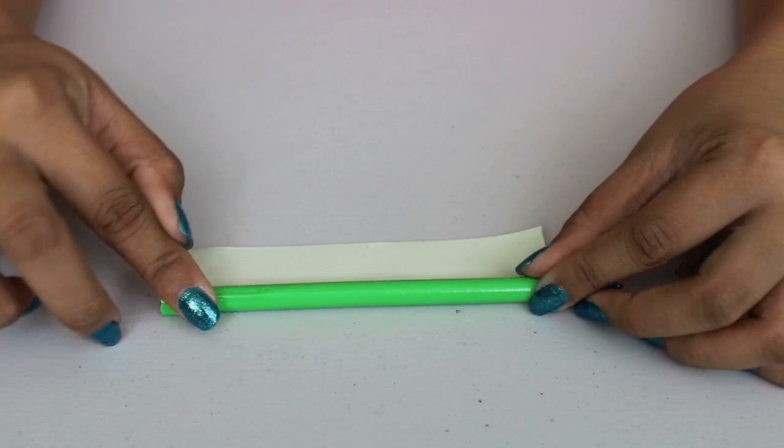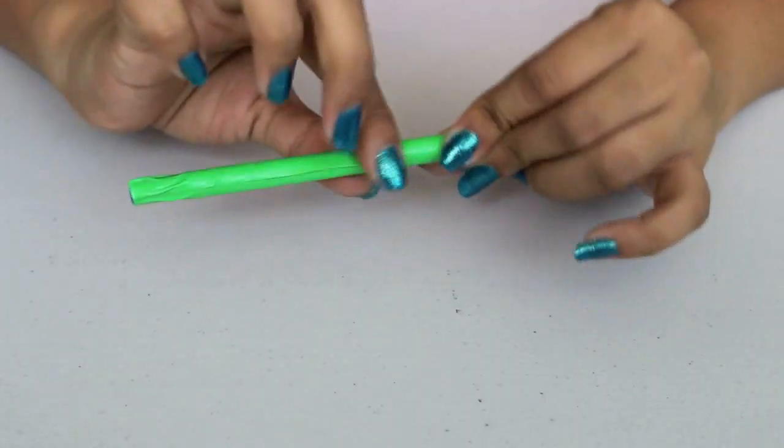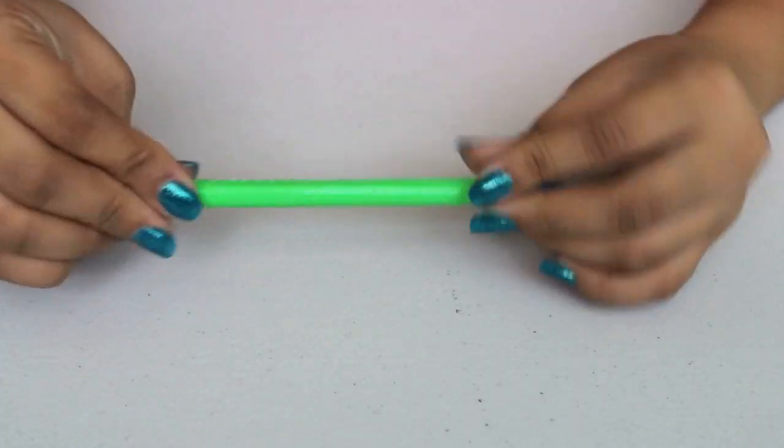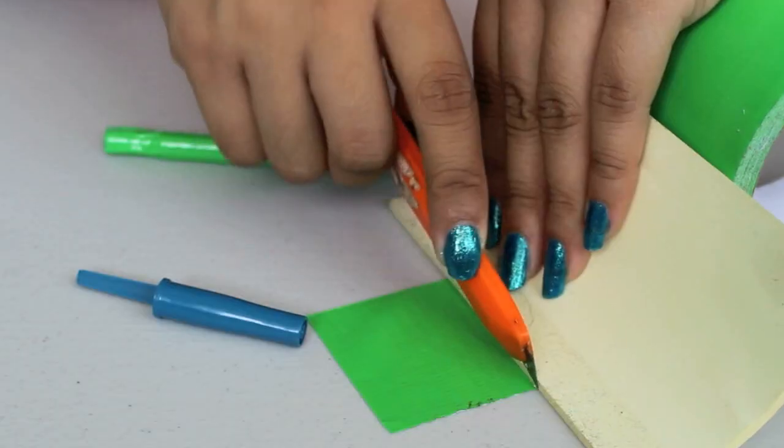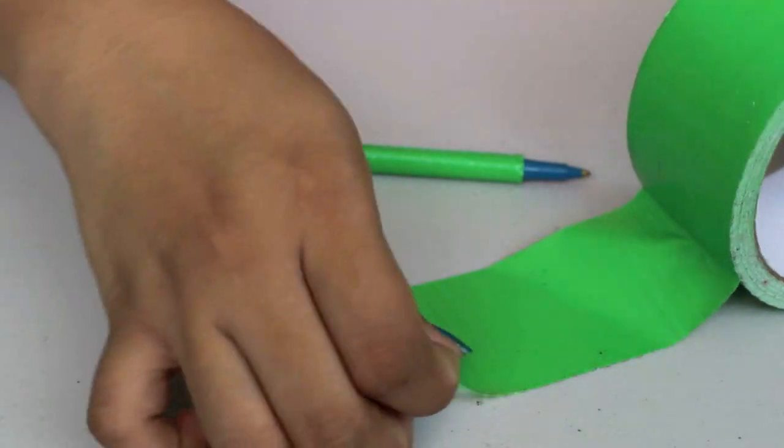Then you're just going to simply wrap it around the base of your pen, and then use the same technique to wrap the cap of your pen.